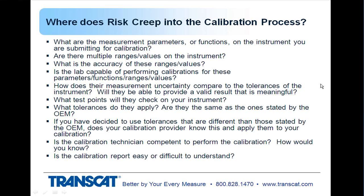What test points will they check on your instrument? We've seen examples where a calibration for a temperature indicating device that had two channels and four different thermocouple types on each channel was only checked on one channel and two thermocouple types, yet the instrument in the production process was used on both channels and three out of four thermocouples. There's no traceability for the channel or thermocouple types that weren't checked, so they have no control over their measurement process.